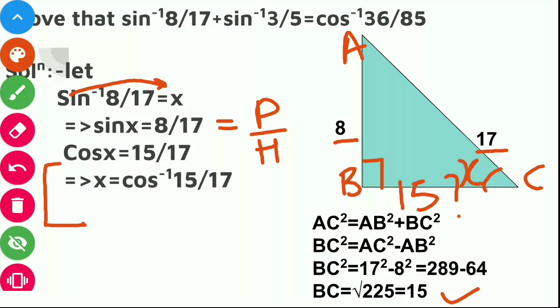We know that cos is equals to base upon hypotenuse. Base is 15 and hypotenuse is 17, so cos x will be 15 by 17. Cos will move to that side. It will become x is equal to cos inverse 15 by 17.